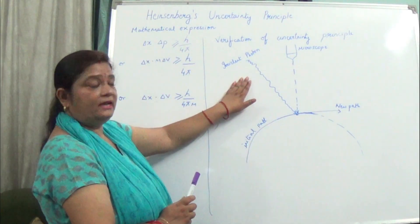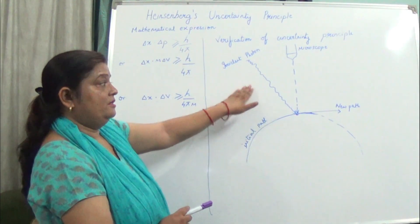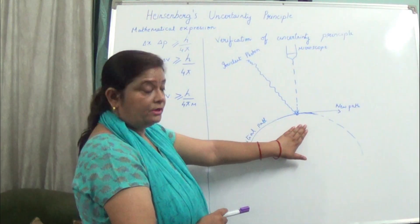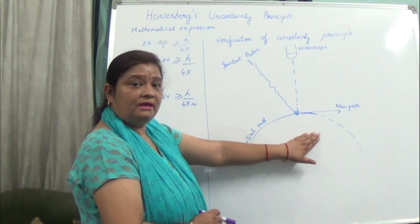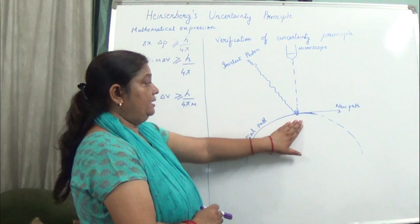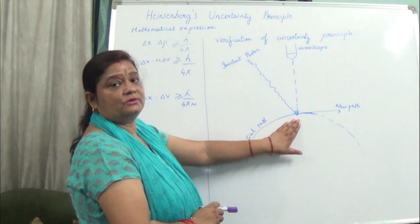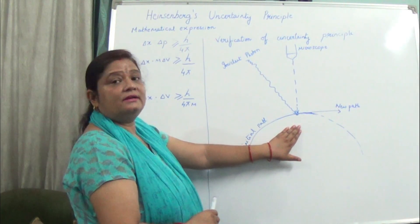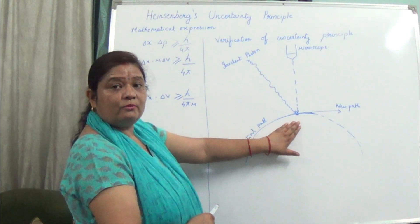If we use an incident photon of greater wavelength, then the position cannot be determined with absolute certainty. But the velocity can be found out with total certainty. So in the case of microscopic bodies, position and velocity cannot be determined simultaneously with absolute certainty.